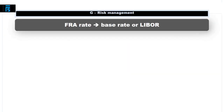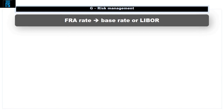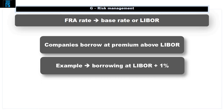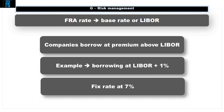Finally, it should be noted that the FRA rate refers to the base rate or LIBOR. Companies will borrow at a premium above LIBOR based on their credit rating. For instance, in the above example, a company who can borrow at LIBOR plus one percent will fix the rate at seven percent, being the six percent quoted in the FRA plus the one percent premium.